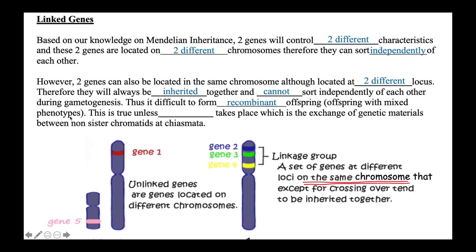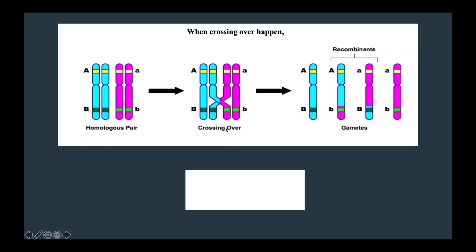This difficulty in forming recombinant offspring is only true unless the process of crossing over takes place, which is the exchange of genetic materials between non-sister chromatids at chiasmata. For example, if gene A and gene B are both located on the same chromosome, during meiosis capital A will always end up in the same gamete as capital B, and small a will always end up with small b. Recombinant gametes will only be produced if crossing over takes place.